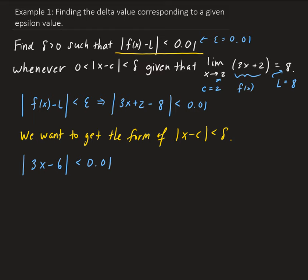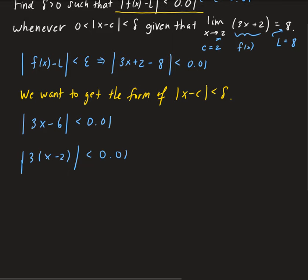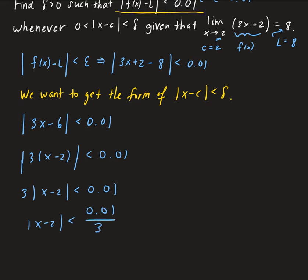From here, we can factor out a 3, giving us 3 times |x minus 2|. Remember, c is 2. We can take the 3 out of the absolute value — that is a valid property — so now we have 3 times |x minus 2| less than 0.01. Dividing both sides by 3, the absolute value of x minus 2 is going to be less than 0.01 divided by 3, which is approximately 0.0033.